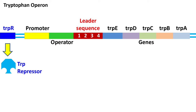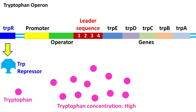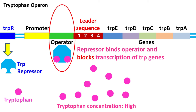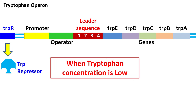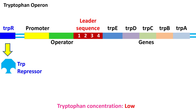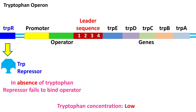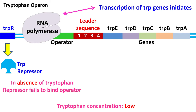When the tryptophan concentration in the cell is very high, the repressor binds tryptophan and blocks the transcription of genes required for the biosynthesis of tryptophan. When the tryptophan concentration in the cell is very low, the repressor fails to inhibit the transcription. As a result, the transcription is initiated by RNA polymerase.